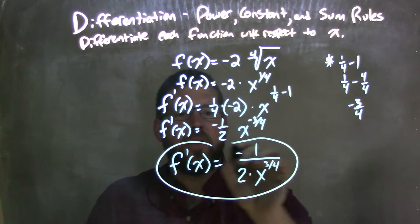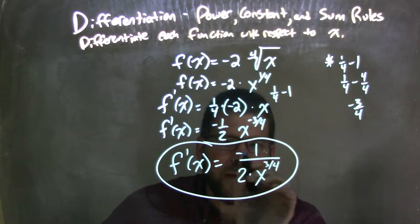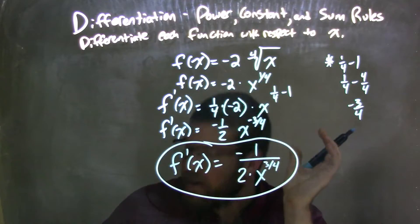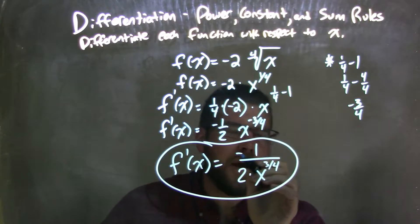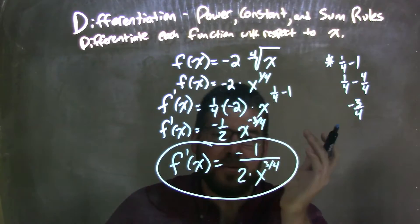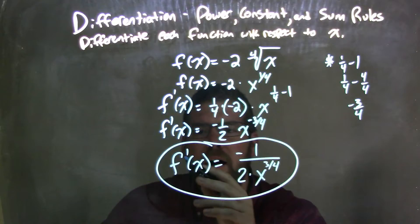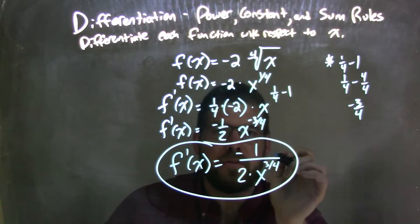And there we have it. Now, some of my students, some people, put a negative out front here or up top. It really doesn't matter. Basically the same thing there. Don't worry about that. If it's up there with a negative 1 or sometimes you'll see it out front, just don't do both of those. That's pretty lame. So we have a final answer here, f prime of x is equal to negative 1 all over 2 times x to the positive three-fourths power.